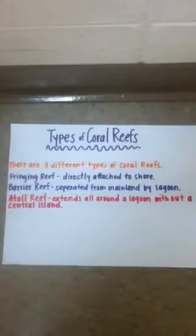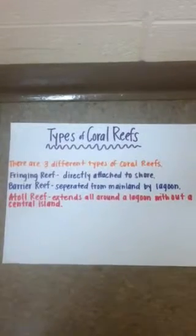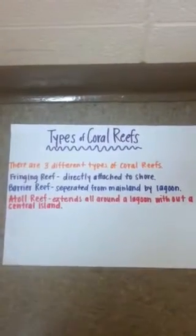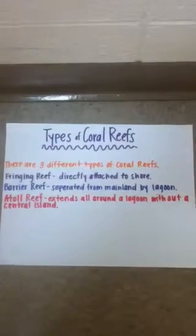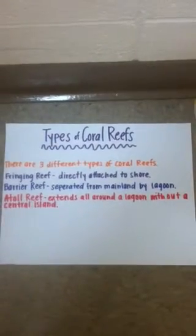There are three different types of coral reefs: a fringing reef, which is directly attached to the shore; a barrier reef, which is separated from the mainland by a lagoon; and an atoll reef, which extends all around a lagoon without a central island.